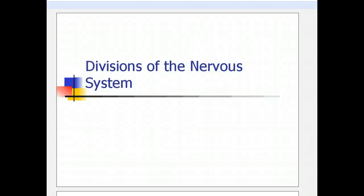Hello. Today we're going to talk about the divisions and parts of the nervous system. Before you start, if you're doing this for one of Ms. Rose's classes, make sure you have a copy of your notes and something to color with. Let's get going.